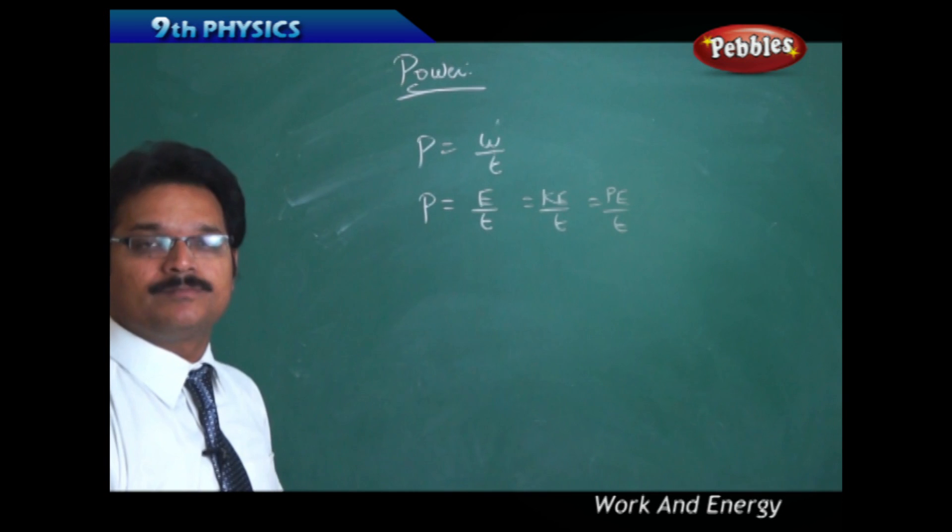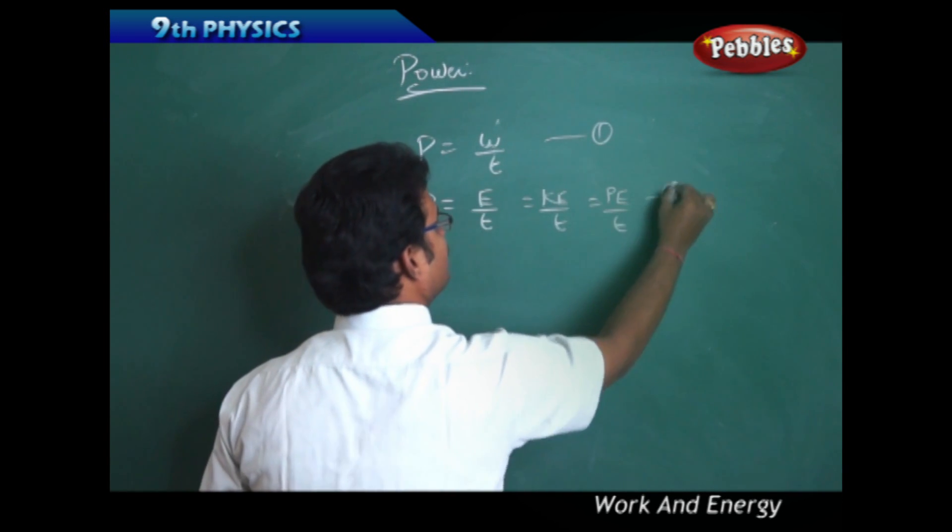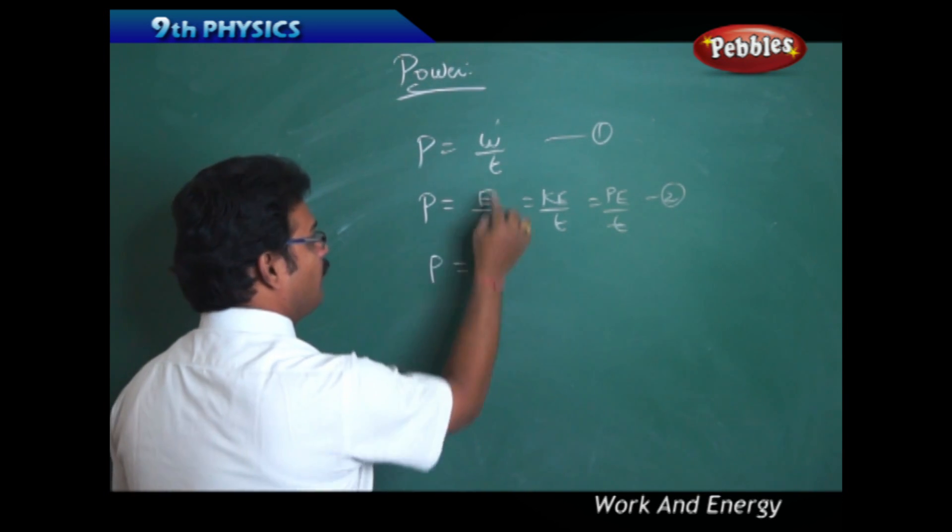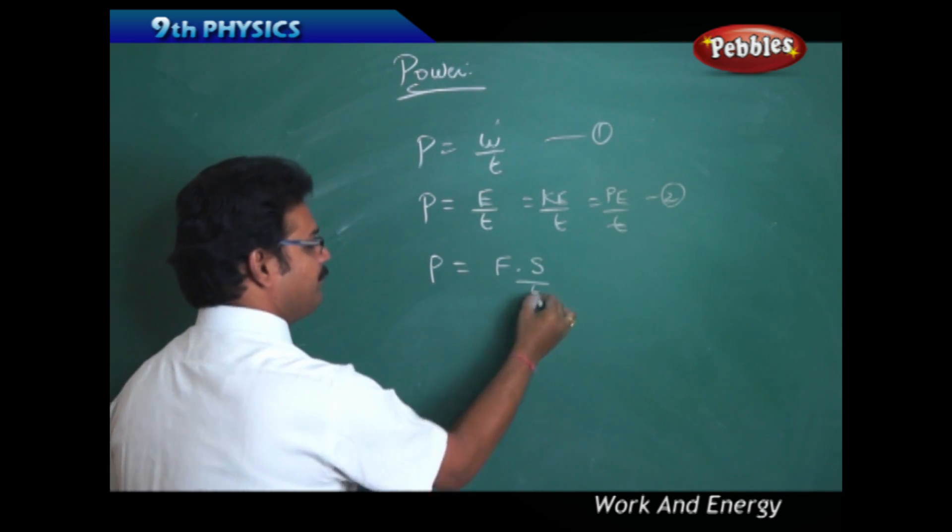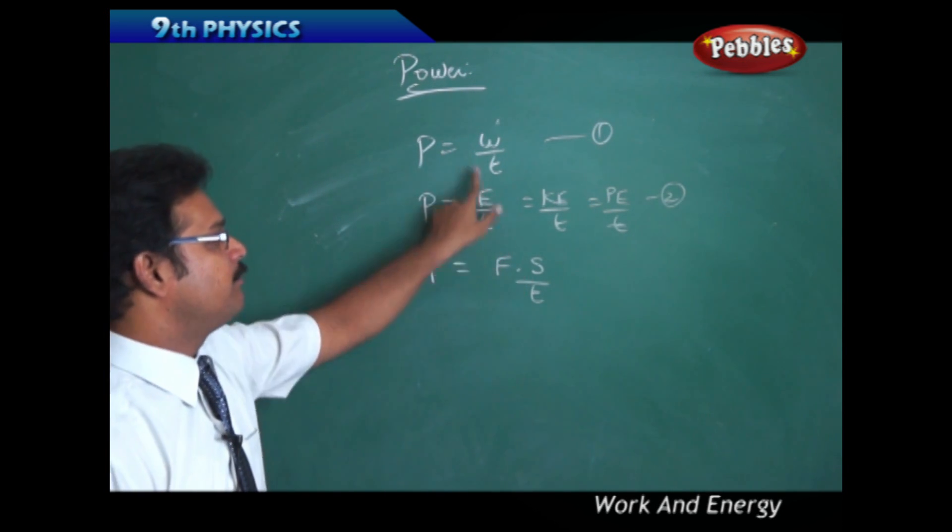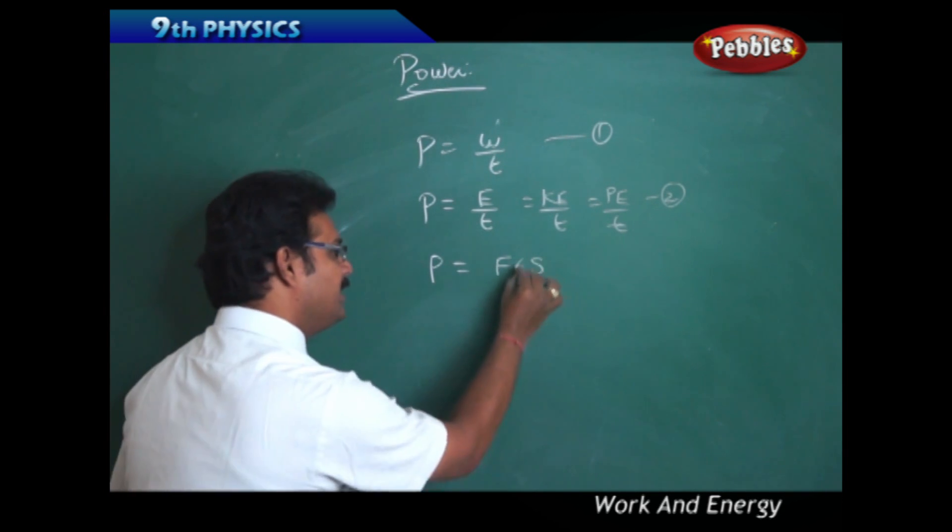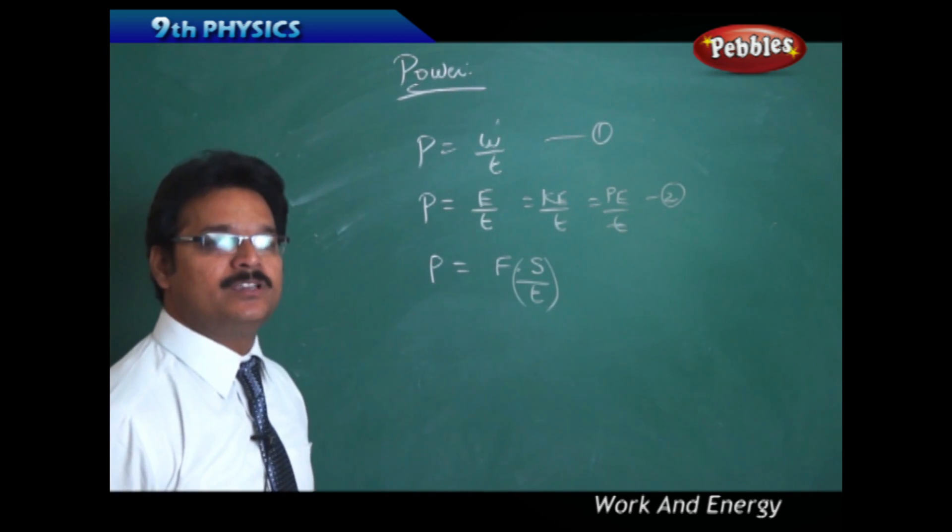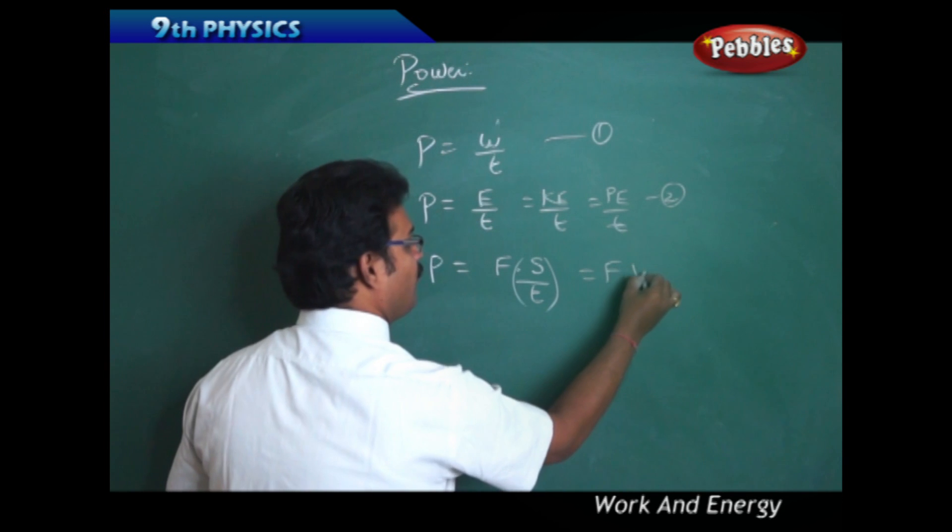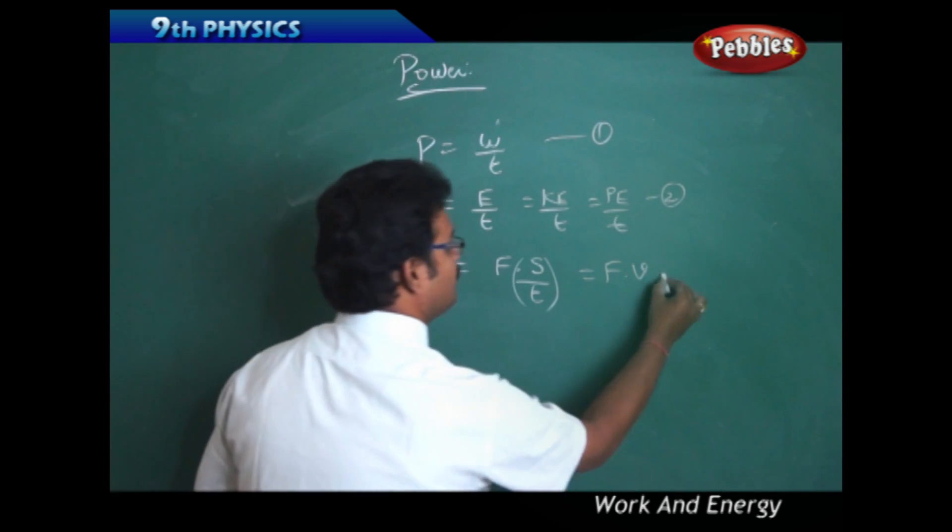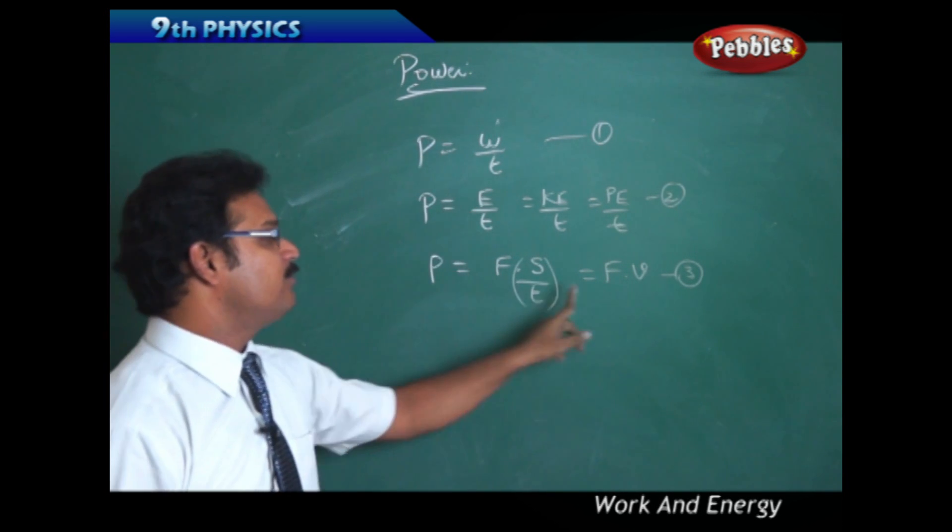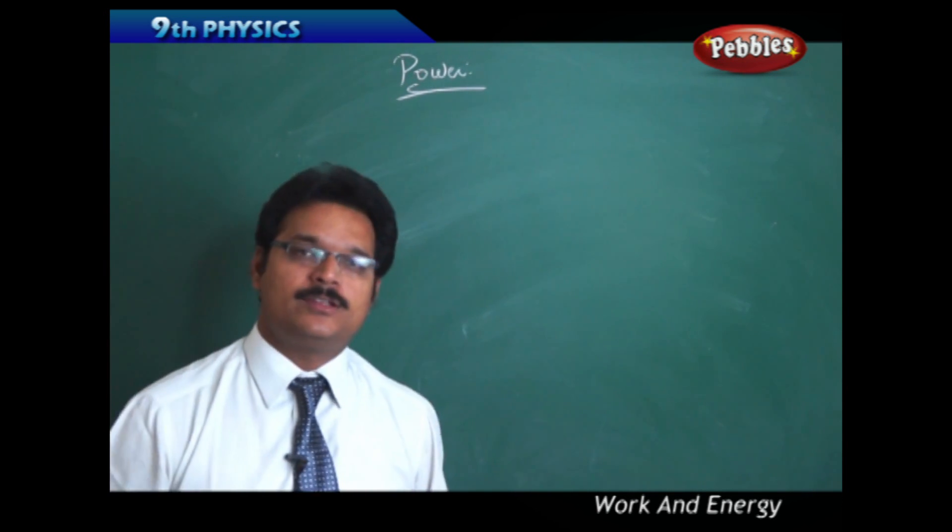Another equation for power: P = work by time. Since work is force into displacement, we can write P = (force × displacement) / time. If you observe carefully, displacement by time is velocity. So power is also force into velocity, P = F × v. Power has three formulas: work by time, energy by time, or force into velocity. Let us do some numerical problems to apply these formulas.